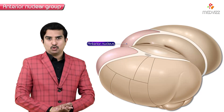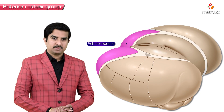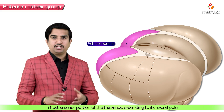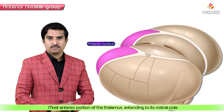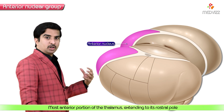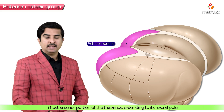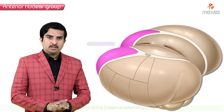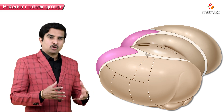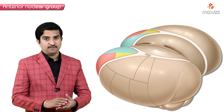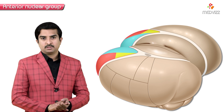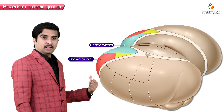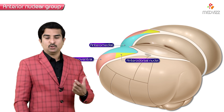The anterior nuclear group of the thalamus is the most anterior portion, extending to its rostral pole. This anterior nuclear complex consists of three subdivisions: the anteroventral, anteromedial, and anterodorsal nuclei.